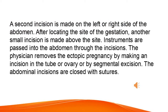A second incision is made on the left or right side of the abdomen. After locating the site of the gestation, another small incision is made above the site. Instruments are passed into the abdomen through the incisions. The physician removes the ectopic pregnancy by making an incision in the tube or ovary or by segmental excision. The abdominal incisions are closed with sutures.